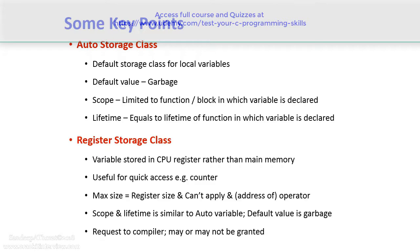In the case of Register Storage Class, a variable is stored in a CPU register rather than main memory. This is useful when we want quick access to that variable — for example, a counter variable which is frequently required. Rather than storing it in memory, if we store it in a CPU register, we can access it faster. The maximum size is equal to the register size, and we cannot apply the address-of operator on register variables since the content is not stored in memory but in the register.